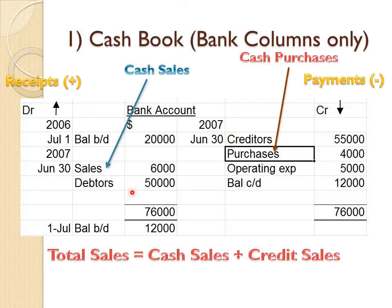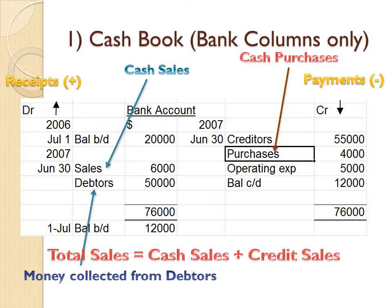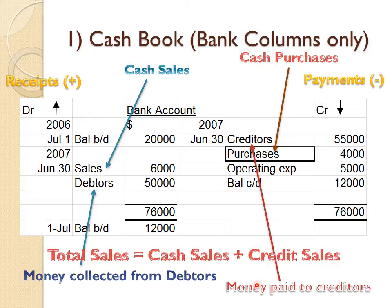If the entry says debtors and money is coming in, that means debtors paid you — so it is money collected from debtors. Similarly, if creditors appear on the payment side, that is obviously money paid to creditors.